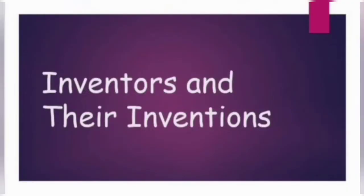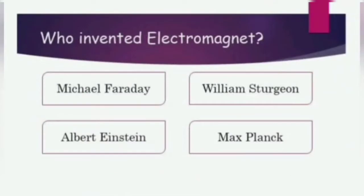Inventors and their inventions. You have five questions to answer. First question: who invented the electromagnet? Your options are Michael Faraday, William Sturgeon.